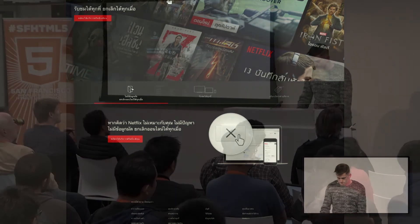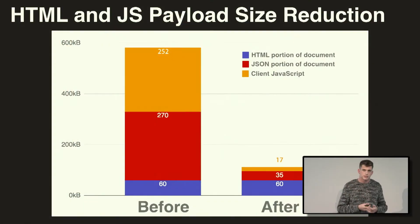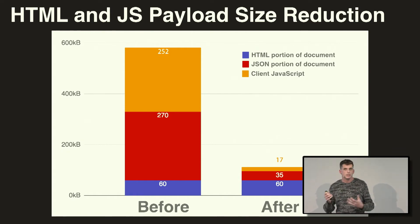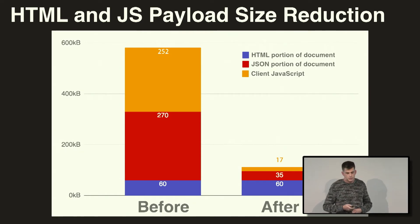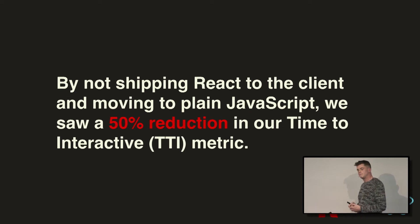So how much did all this help us? We reduced the payload by over 400k by not shipping React and the JSON payload down to the client. By not shipping React to the client and rewriting some functionality in plain JavaScript, we saw a 50% reduction in our time to interactive metric, which is pretty substantial. But what was maybe more interesting is that by doing this, we found that users clicked on the sign-up button at a greater rate, which gave us great confidence that what we were doing actually mattered to our end users.